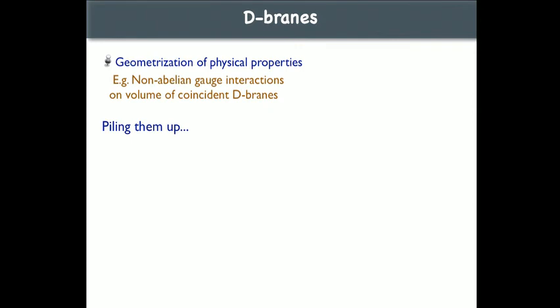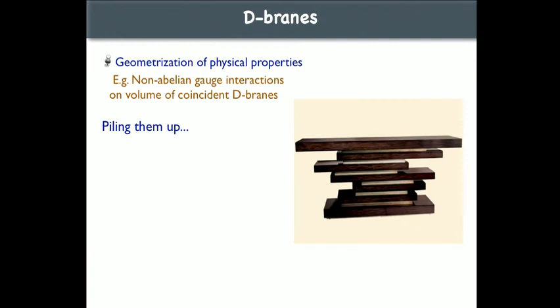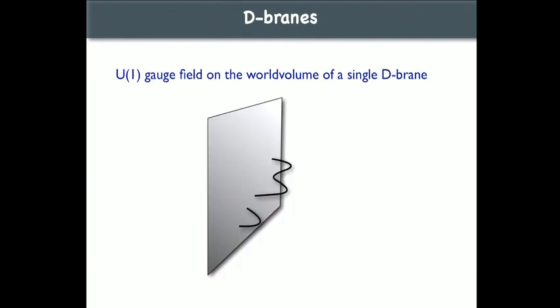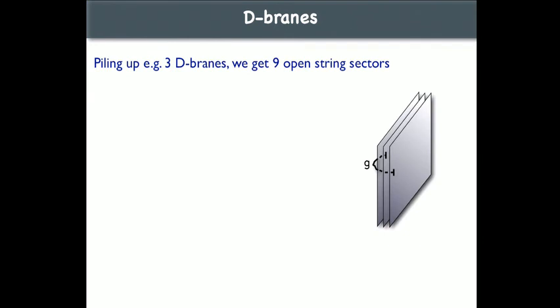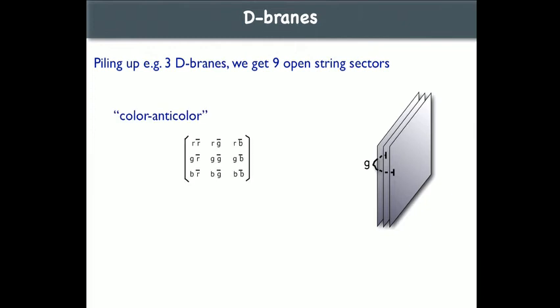An important property of D-branes is that they geometrize things in a very simple way. For instance, the appearance of non-abelian gauge interactions, which is somehow tricky in the heterotic context, is in the context of D-branes just very easy — you just pile up branes and you get non-abelian gauge interactions. To realize a U(1) gauge field, you just put a single brane and you get something like electromagnetism. If you want to reproduce color, you use three branes on top of each other, giving an SU(3)-like structure up to some U(1) factor. There are plenty of U(1)s and there is a lot of rich physics of U(1)s that will be one of the main topics.